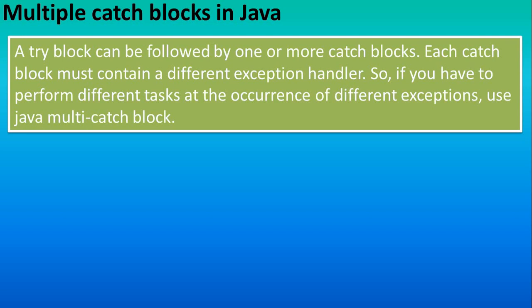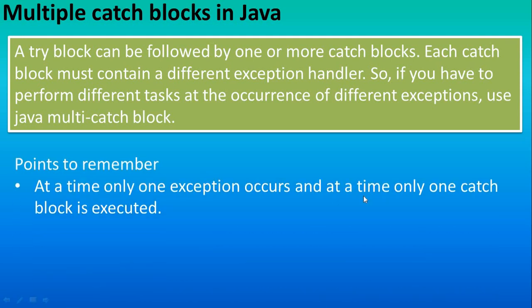Today we will see multiple catch blocks in Java. Multiple catch means more than one catch. If we have more than one catch in a program, many learners get confused. The important thing is each catch block must contain a different exception. For example, if you have two catch blocks, you use different exception classes like ArithmeticException and ArrayIndexOutOfBoundsException. You cannot use ArithmeticException in both catch blocks. If you have to perform different tasks, we use multiple catch blocks. At a time, only one exception occurs and only one catch block is executed.